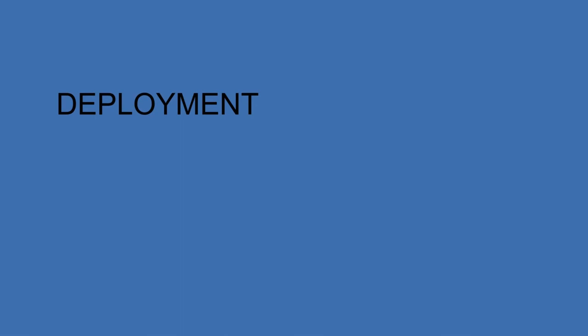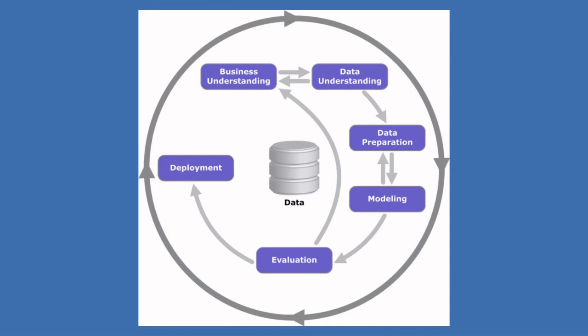Let's look at the diagram one last time. As we can see, the process is not necessarily linear. We can go from one step back to another in case we figure out we didn't do it well enough in the first place. For example, if we come to the evaluation step of CRISP-DM and realize that the models do not solve our problem, we can simply go back to business understanding in order to better understand what it was that we wanted to solve.